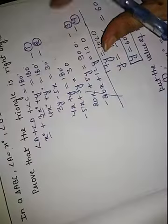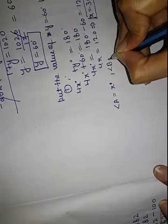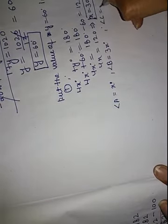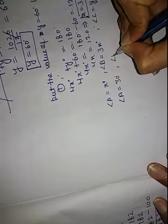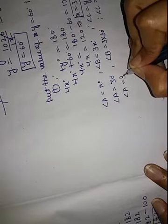With x = 30 and y = 60: angle A = x = 30 degrees, angle B = 3x = 3(30) = 90 degrees, angle C = y = 60 degrees. Since angle B = 90 degrees, the given triangle is a right angle triangle. Hence proved.